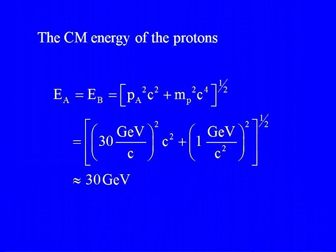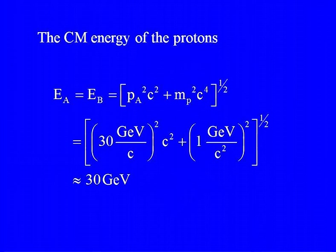First, let us find the centre-of-mass energy of the protons. E_A equals the square root of P_A squared·c squared plus M_P squared·c⁴. Here P_A squared·c squared equals 30 squared equals 900, and the rest mass energy squared equals 1² equals 1. So 900 plus 1 equals 901, and the square root of 901 is approximately 30 GeV. This confirms it is an ultra-relativistic case, and we can neglect the rest mass compared to the momenta.